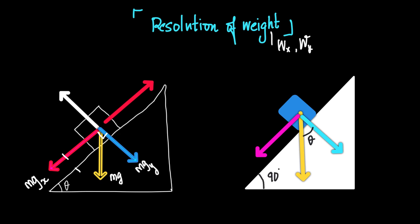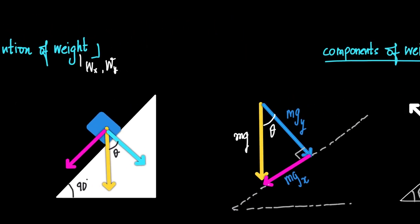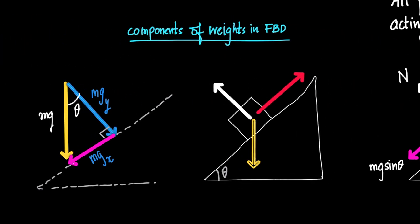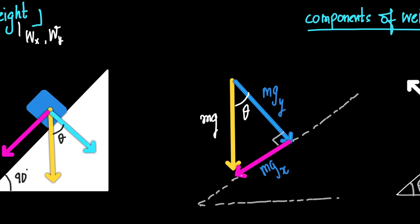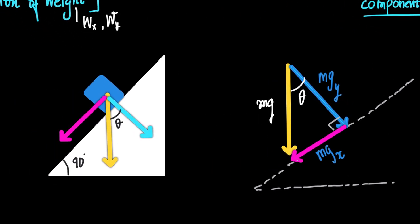We need to find out these values. We'll try to understand only the components of weight. The vector mgx can be translocated from its position and placed at another location keeping its magnitude and direction, forming a right triangle. So we have this triangle now.